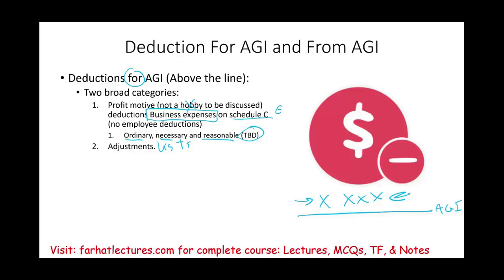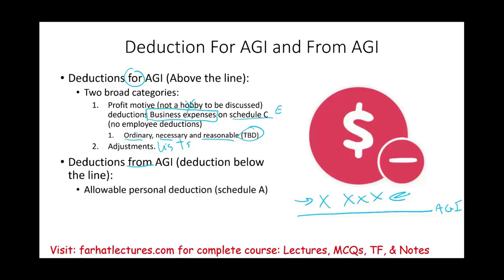We're going to look at those adjustments in a moment. Then we have deductions from AGI. Those are below the line — simply put, those are allowable personal deductions. We are discussing here Schedule A, which I will show you as well, so you can see where everything fits. This is the big picture.